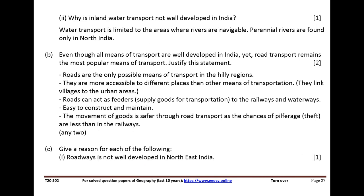Even though all means of transport are well developed in India, yet road transport remains the most popular means of transport. Justify this statement. Roads are the only possible means of transport in hilly regions. They are more accessible to different places than other means of transportation. Roads can act as feeders to the railways and waterways. Easy to construct and maintain. The movement of goods is safer through road transport as the chances of pilferage are less than in the railways.